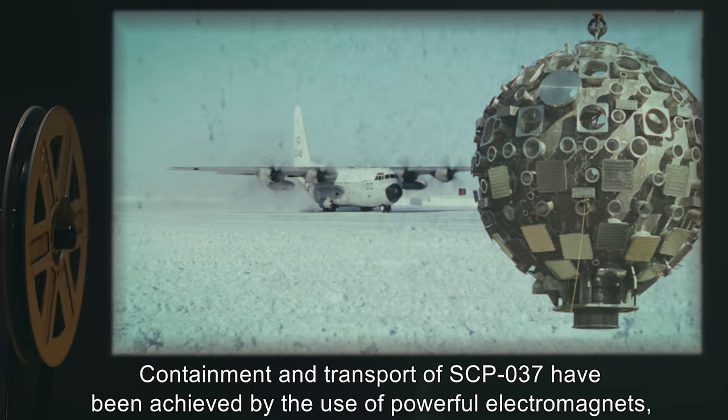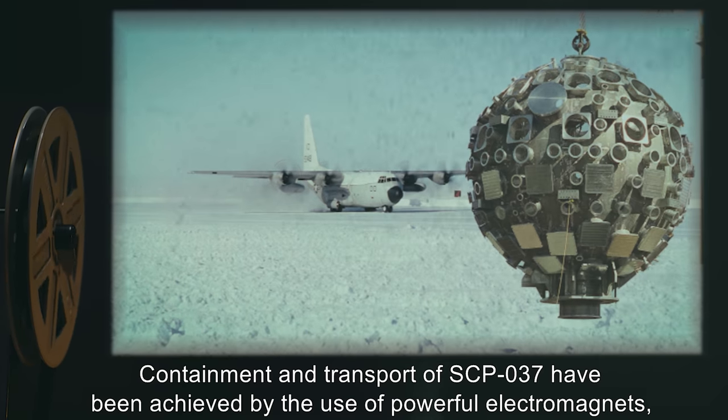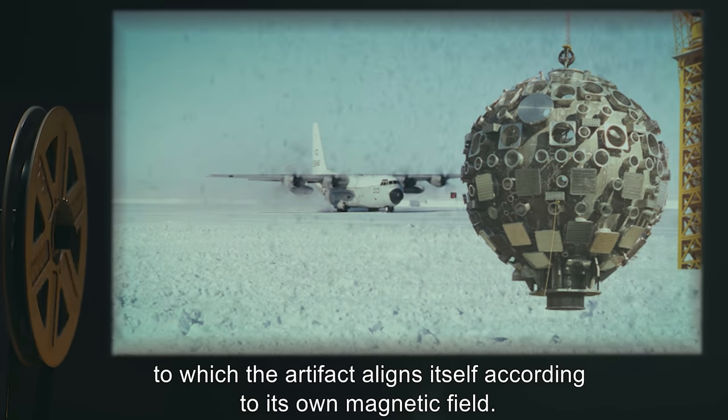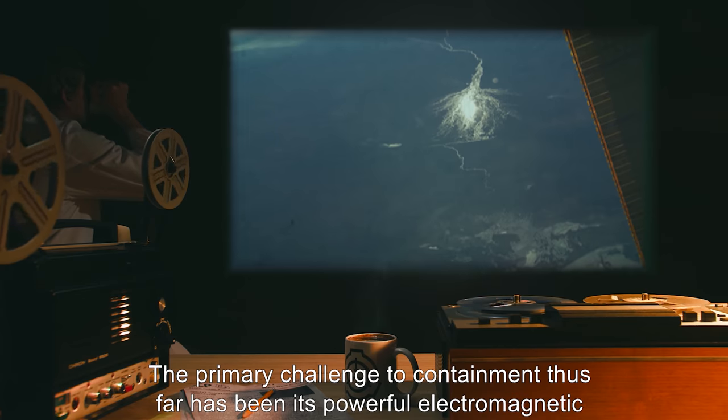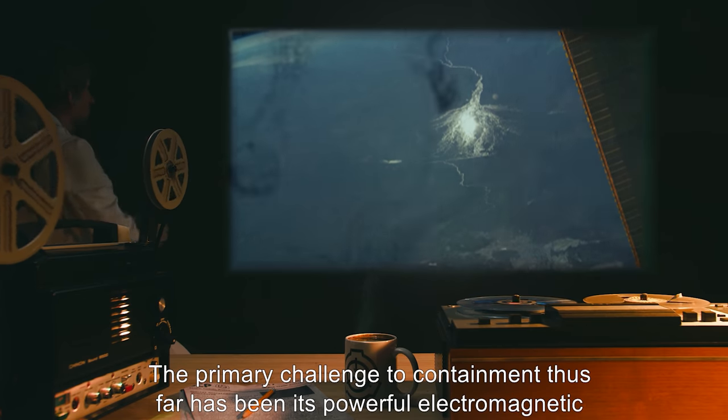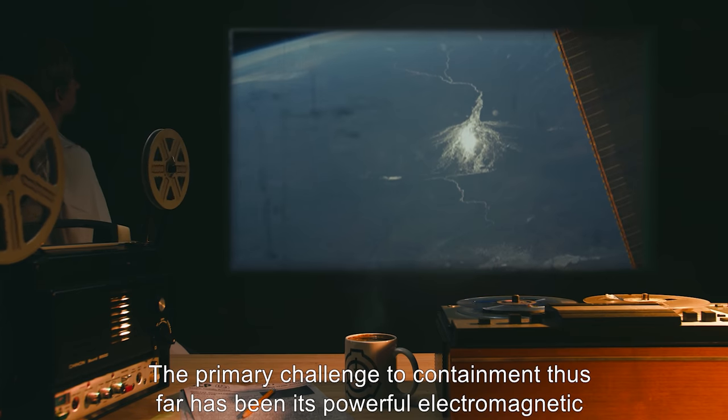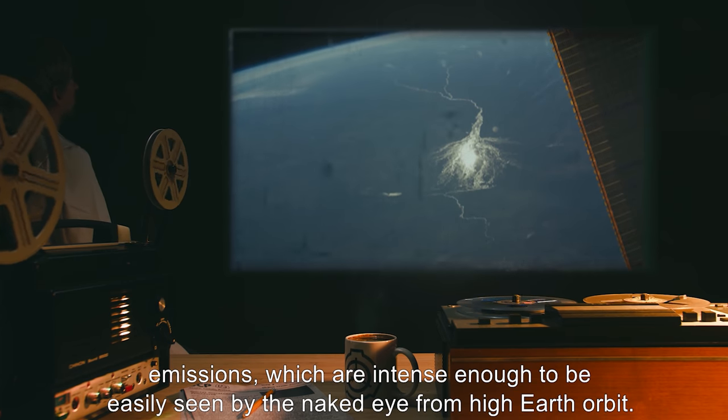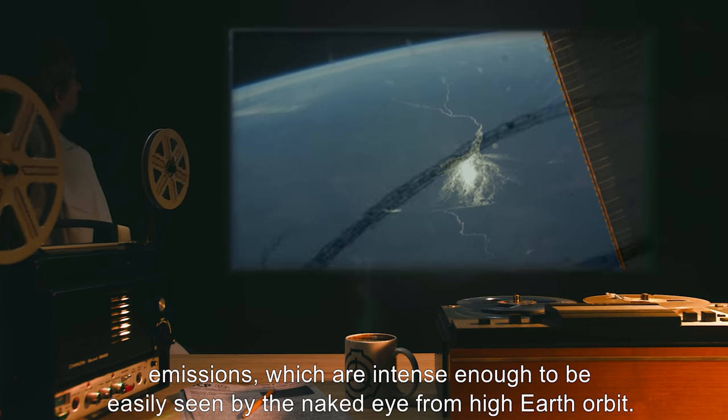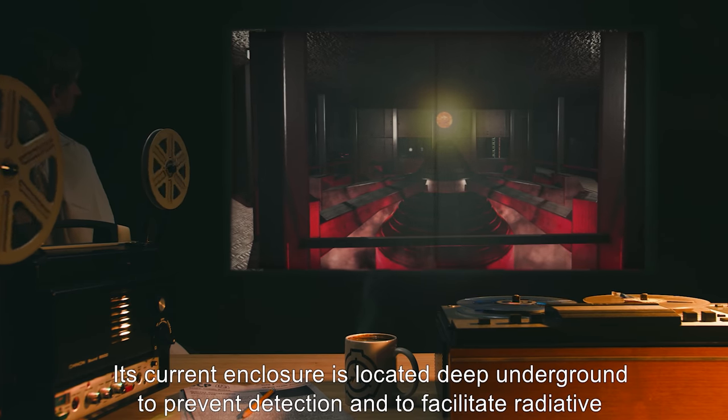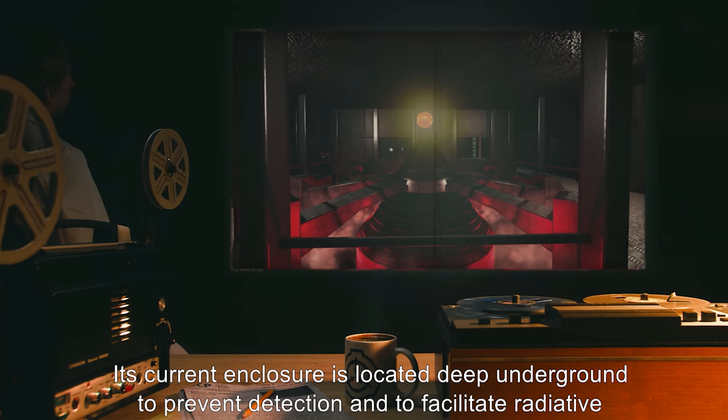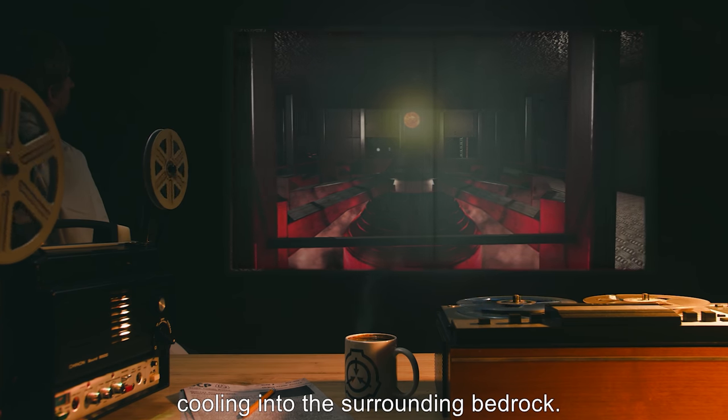Containment and transport of SCP-037 have been achieved by the use of powerful electromagnets, to which the artifact aligns itself according to its own magnetic field. The primary challenge to containment thus far has been its powerful electromagnetic emissions, which are intense enough to be easily seen by the naked eye from high Earth orbit.